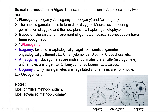The second type is anisogamy: both gametes are motile but males are smaller (microgametes) and females are larger. Example: Chlamydomonas braunii and Ectocarpus. The third type is oogamy: only male gametes are flagellated and females are non-motile. Example: Oedogonium. The most primitive method is isogamy and the most advanced type of sexual reproduction is oogamy.